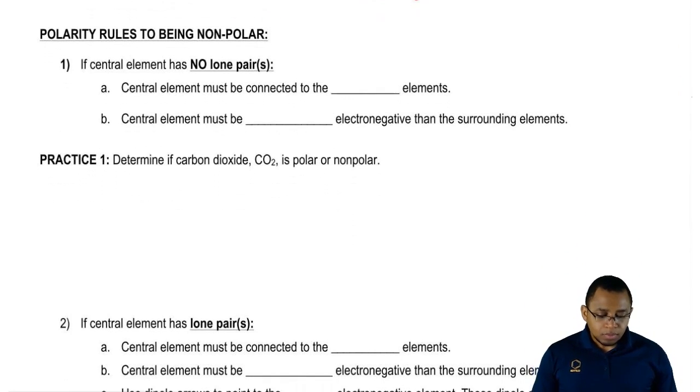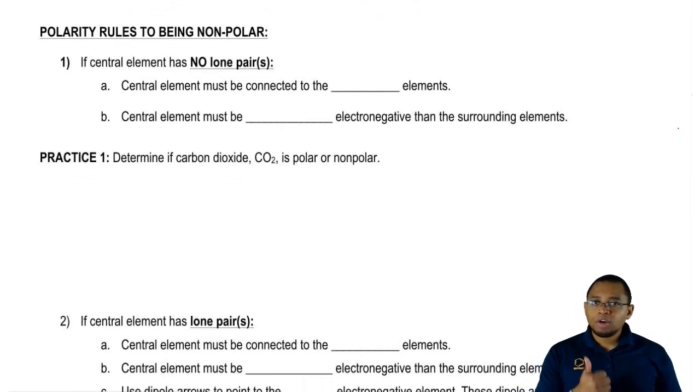We break it down into two simple rules. These are the rules to determine if a compound will be nonpolar. If it follows all the rules, it's going to be nonpolar. If it breaks any of them, it's going to automatically be polar.